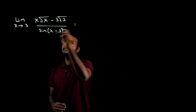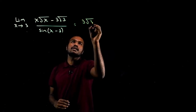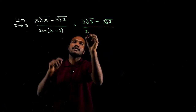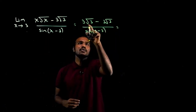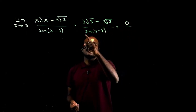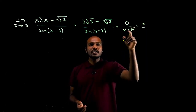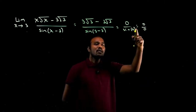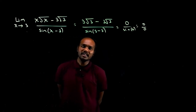So let's substitute. We have to substitute 3. If I substitute 3, I get 3√3 minus 3√3 divided by sine of (3 minus 3). That is 0 divided by sine(0), which is 0. So we get 0 by 0 form. What do we do when we have 0 by 0 form?